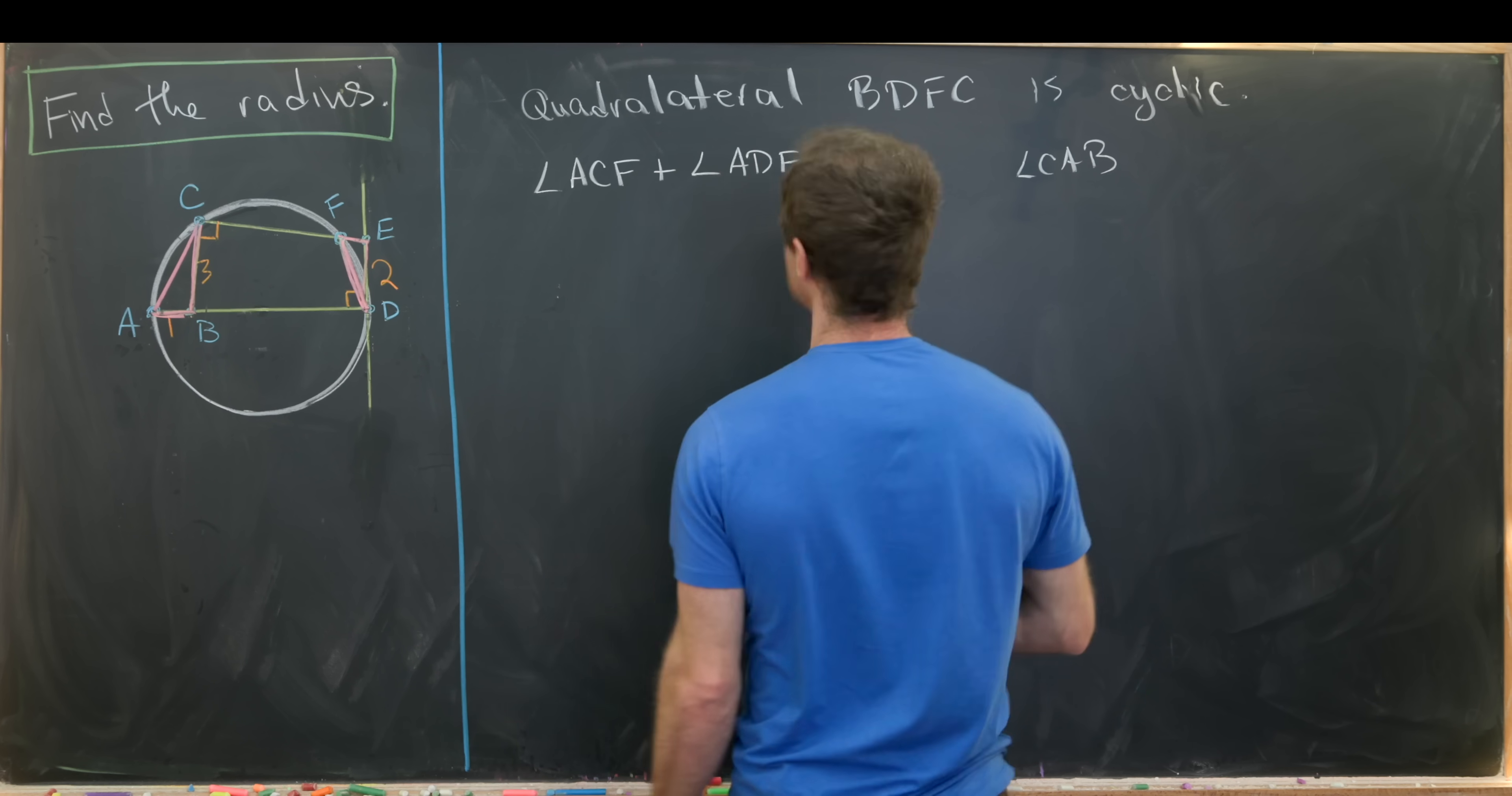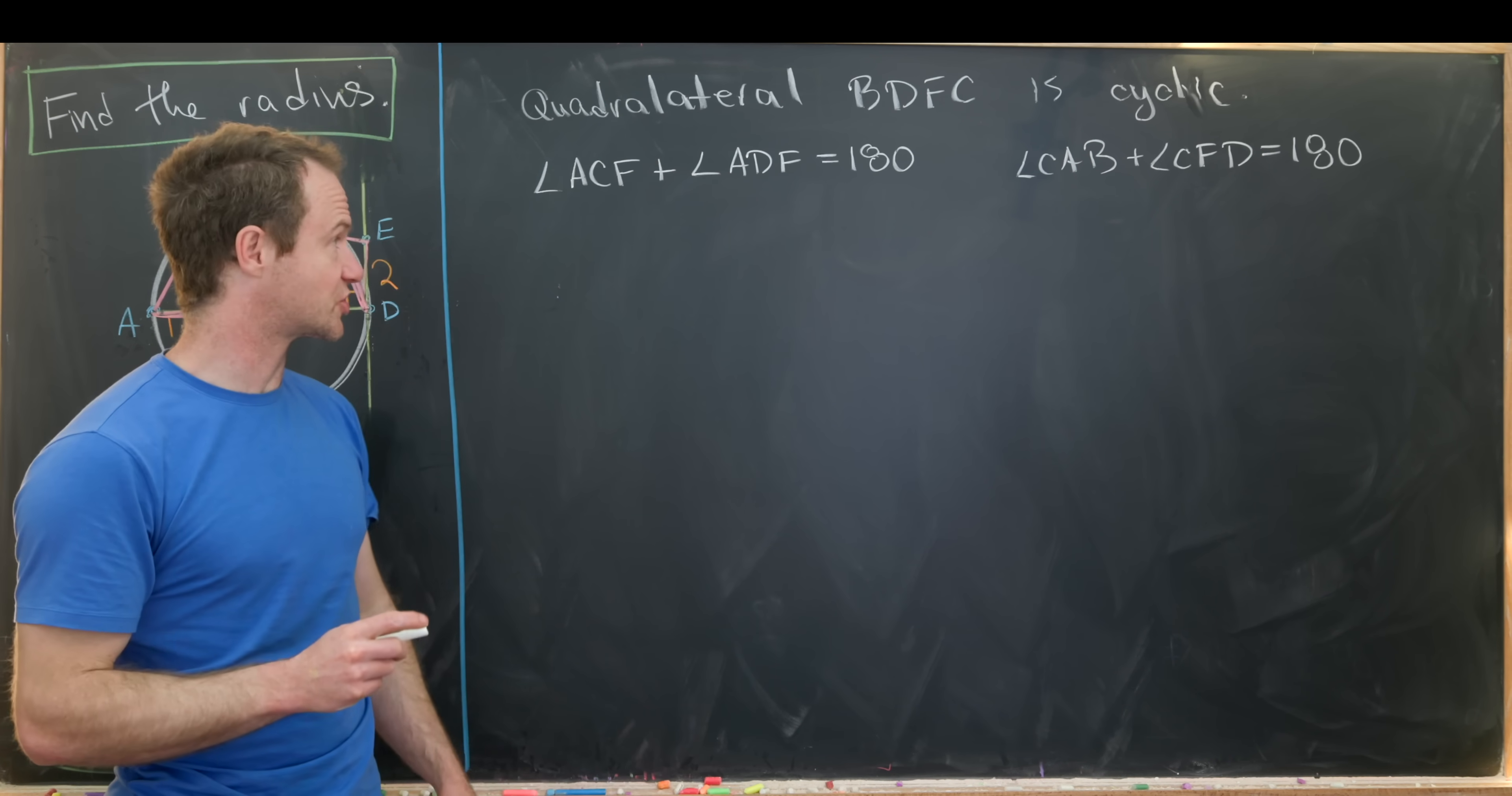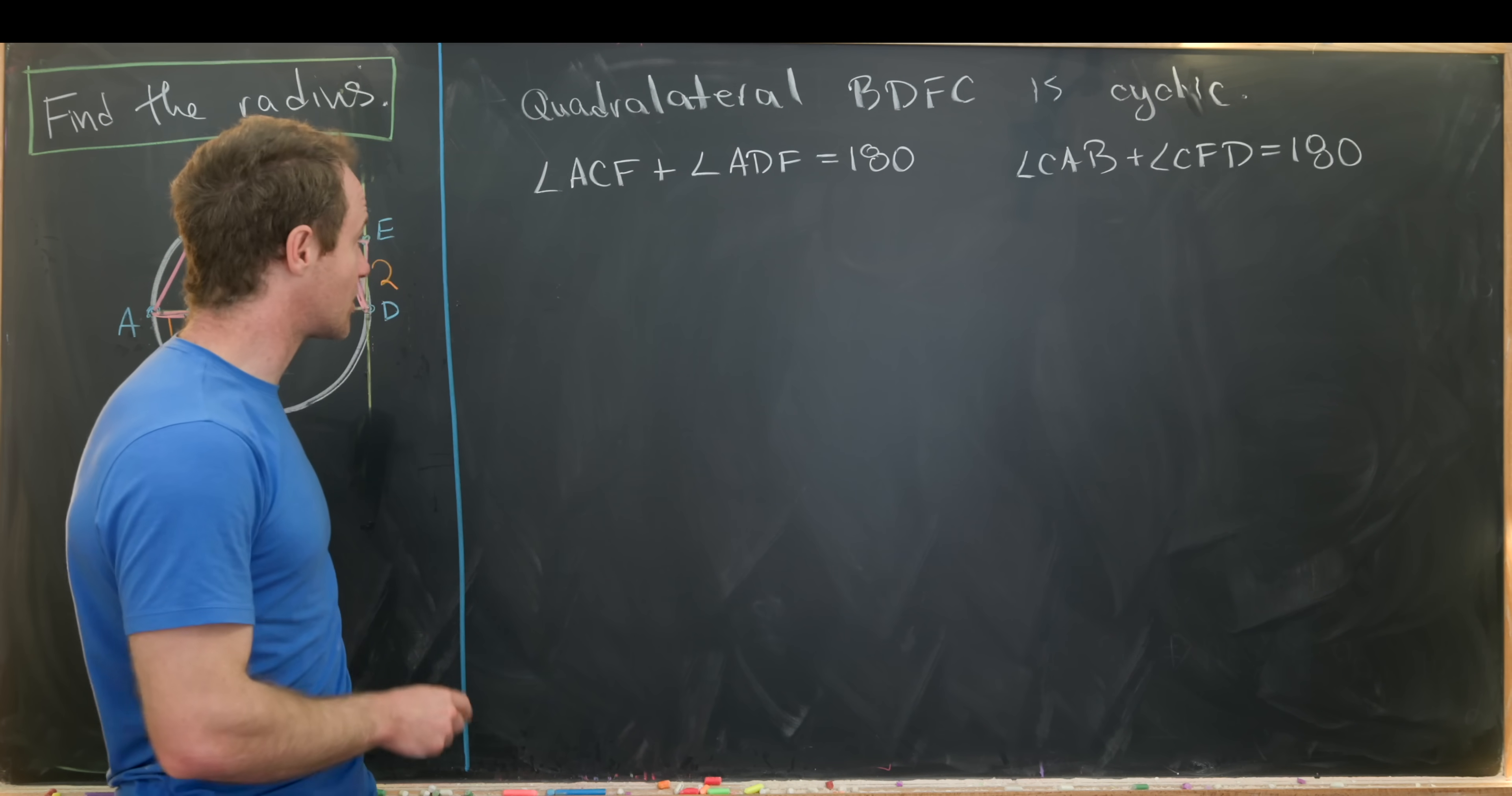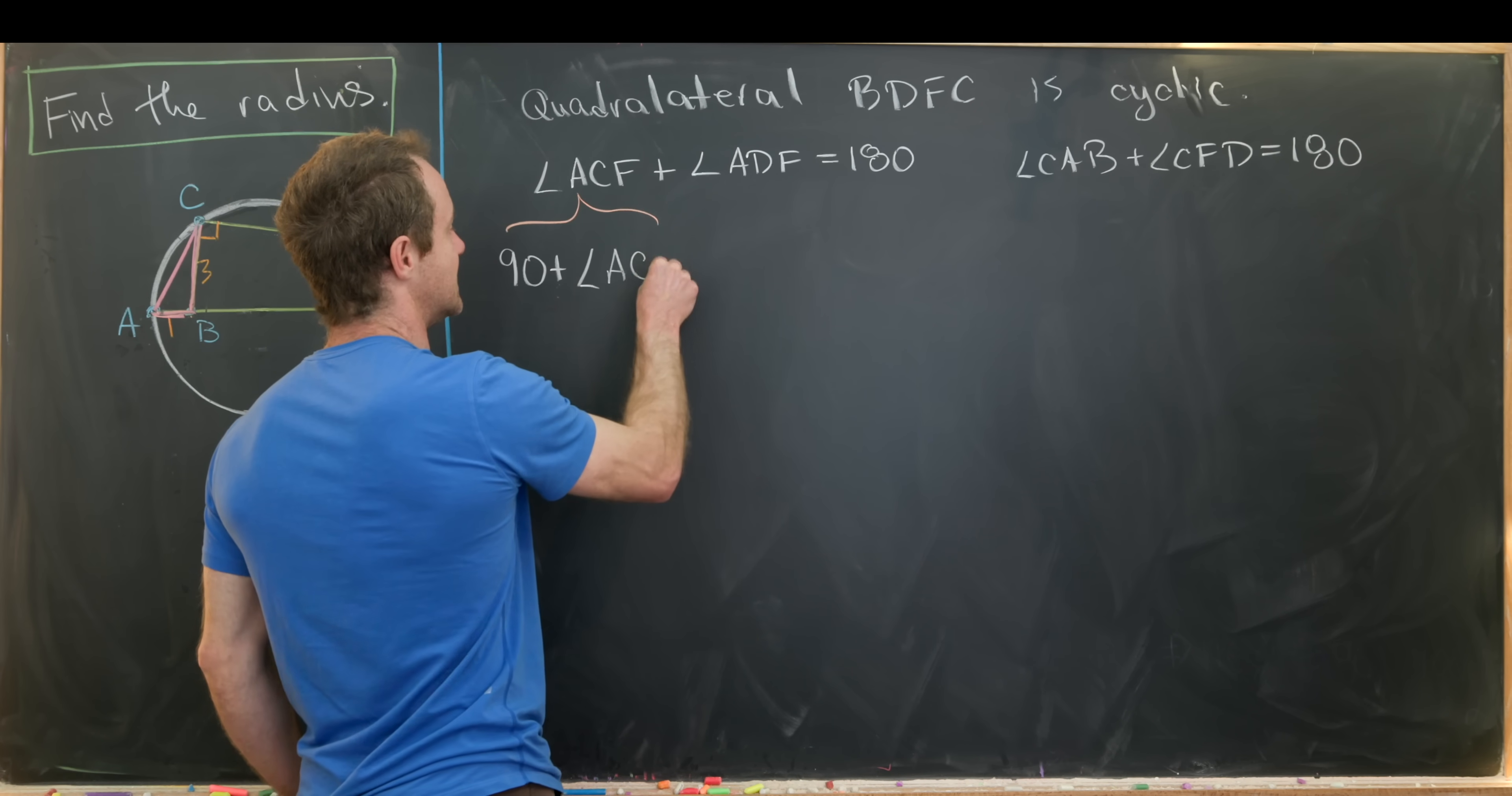And then furthermore, we can do that for the other opposite angles as well. So angle CAB plus the one opposite it, so that would be DFC or CFD, plus angle CFD equals 180. And now we'd like to use those along with some other things that are kind of obviously happening in our picture to show that some angles are congruent and eventually get that these two triangles that we've created are similar.